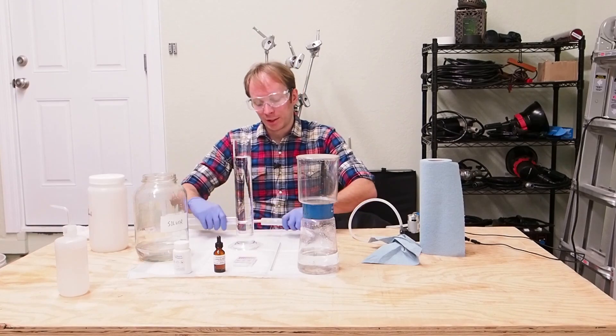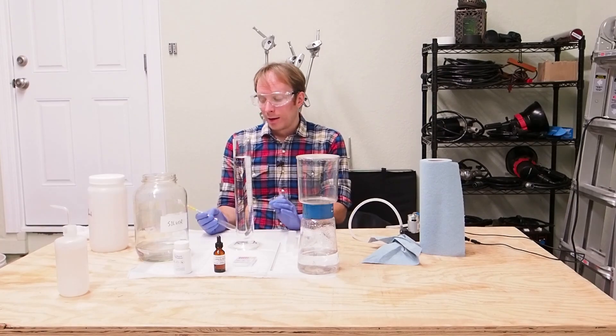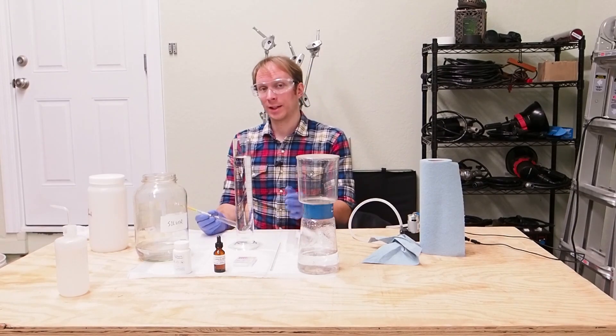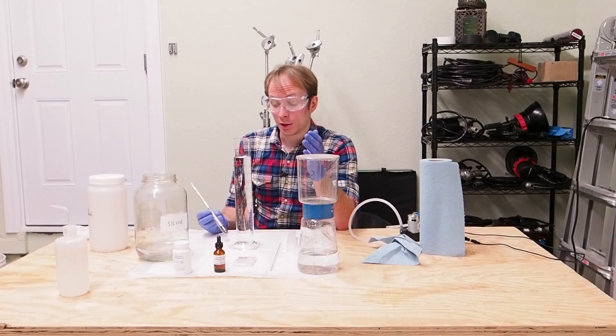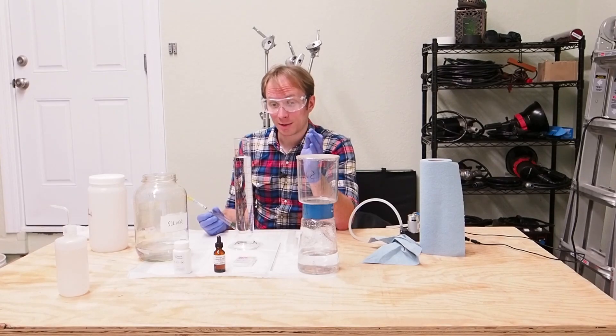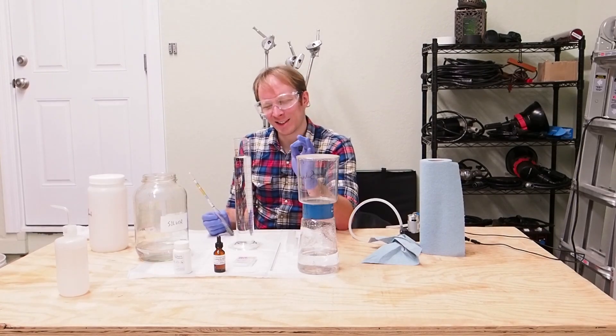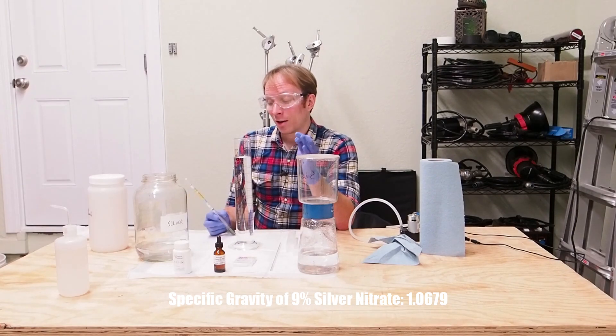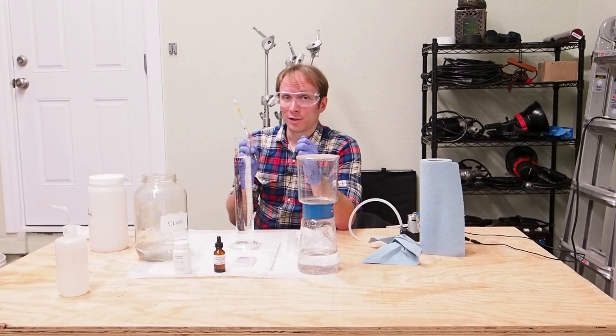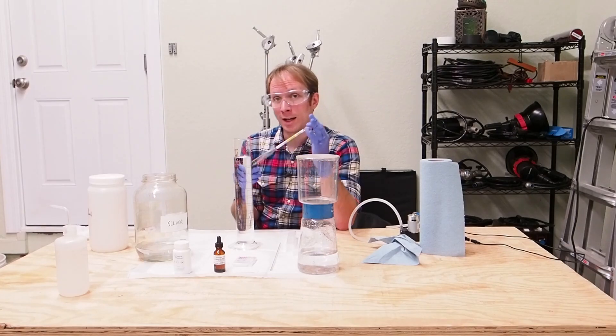Now, the second thing we need to check is the specific gravity of the silver bath. A fresh silver bath that's just pure water and silver nitrate, if it's 9% silver bath, it should have a specific gravity reading of just a hair under 1.07. That's basically what you're looking for. The way you measure this is with just any old hydrometer. These are super common, easy to find. People use them for brewing.